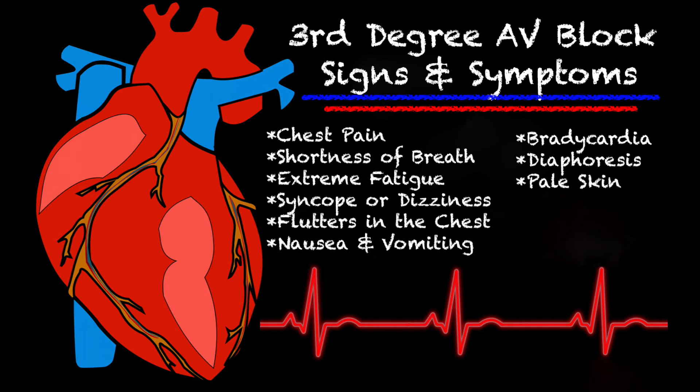Signs and symptoms of a third degree AV block can include chest pain, shortness of breath, extreme fatigue, syncope or dizziness, flutters in the chest, nausea and vomiting, diaphoresis, bradycardia, and pale skin.